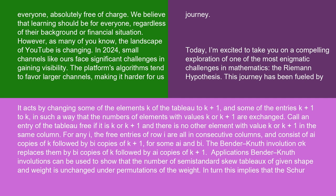Call an entry of the tableau free if it is k or k+1, and there is no other element with value k or k+1 in the same column. For any row i, the free entries are all in consecutive columns and consist of a_i copies of k followed by b_i copies of k+1. The Bender-Knuth involution σ_k replaces them by b_i copies of k followed by a_i copies of k+1.